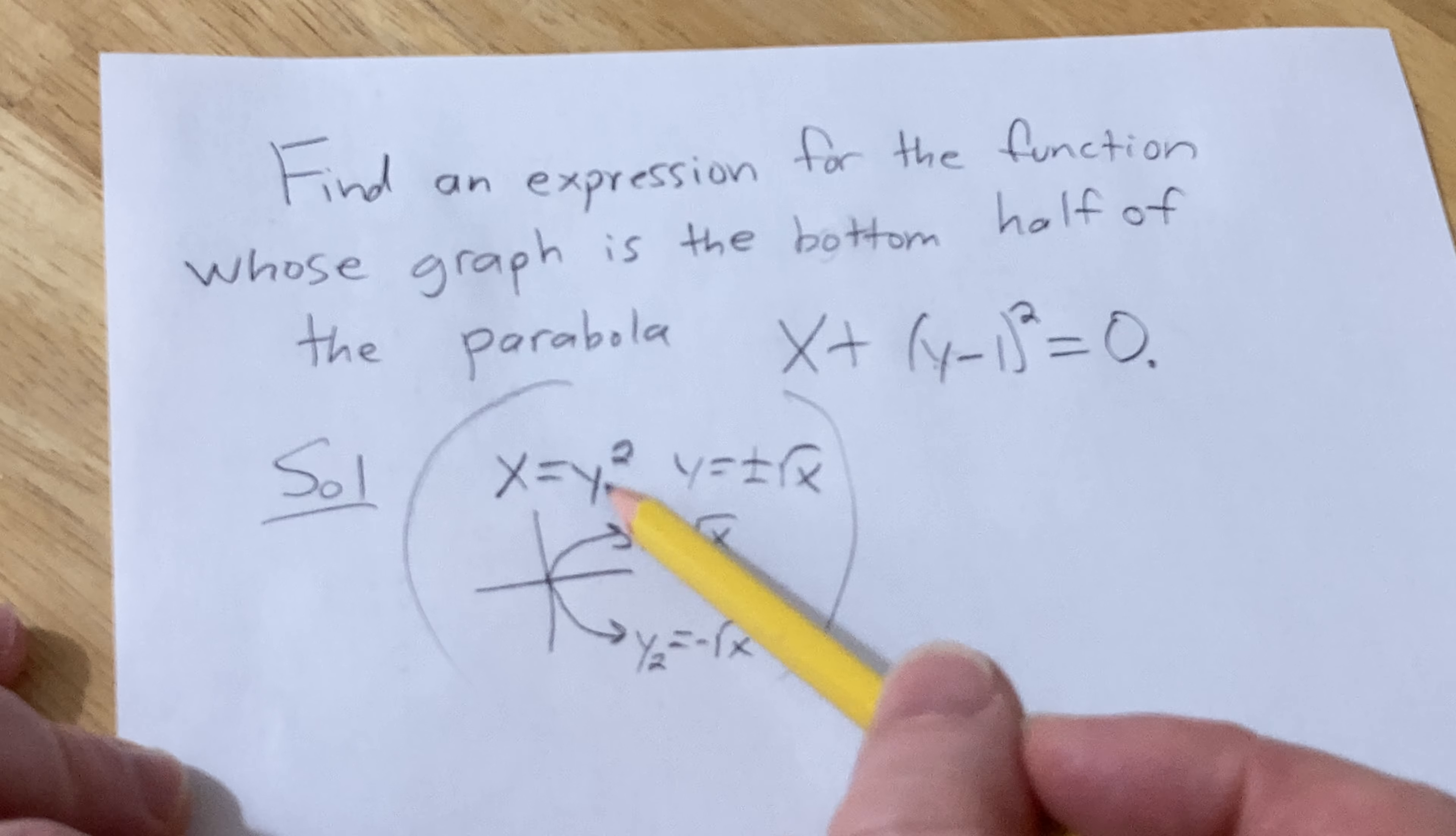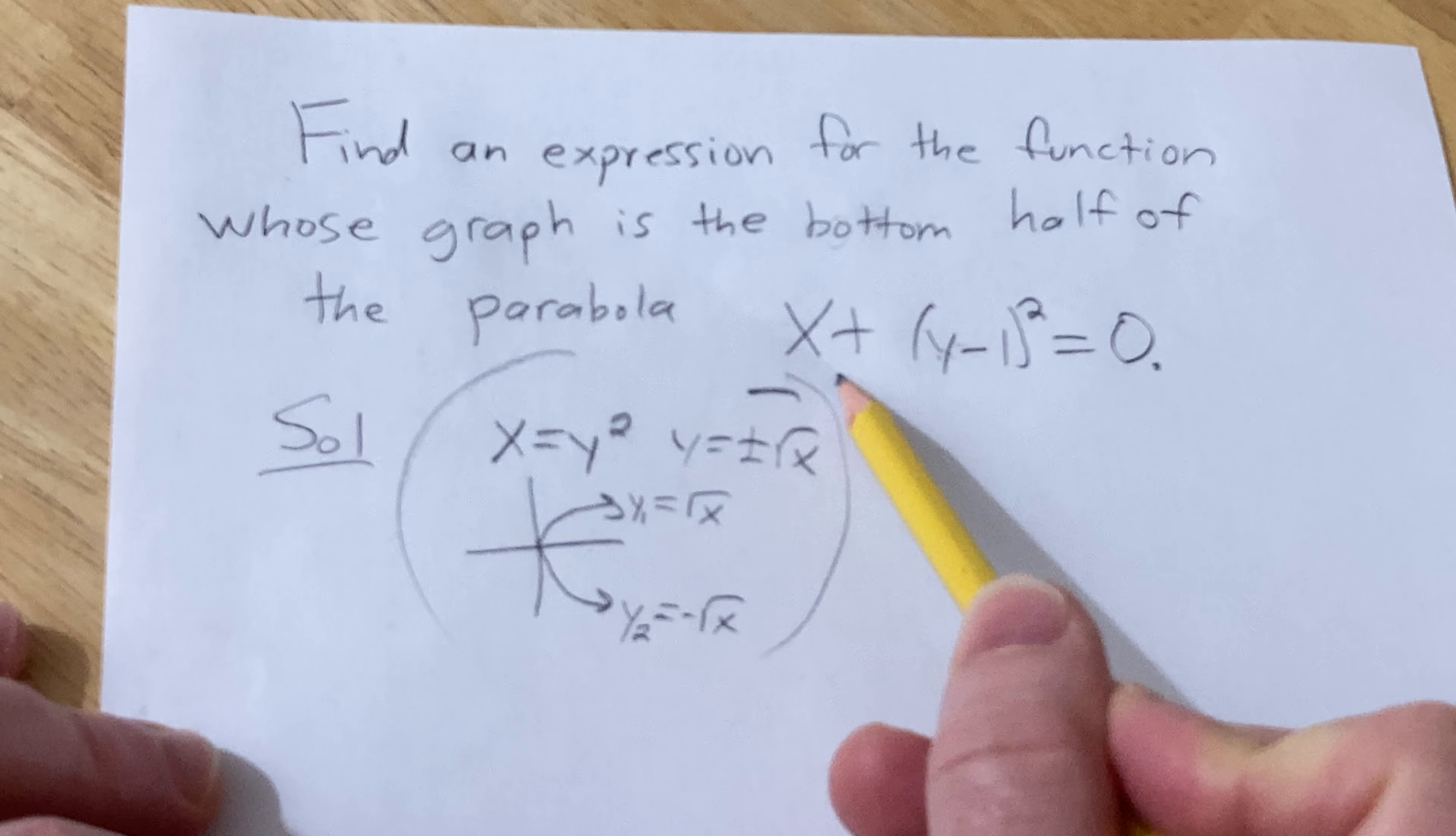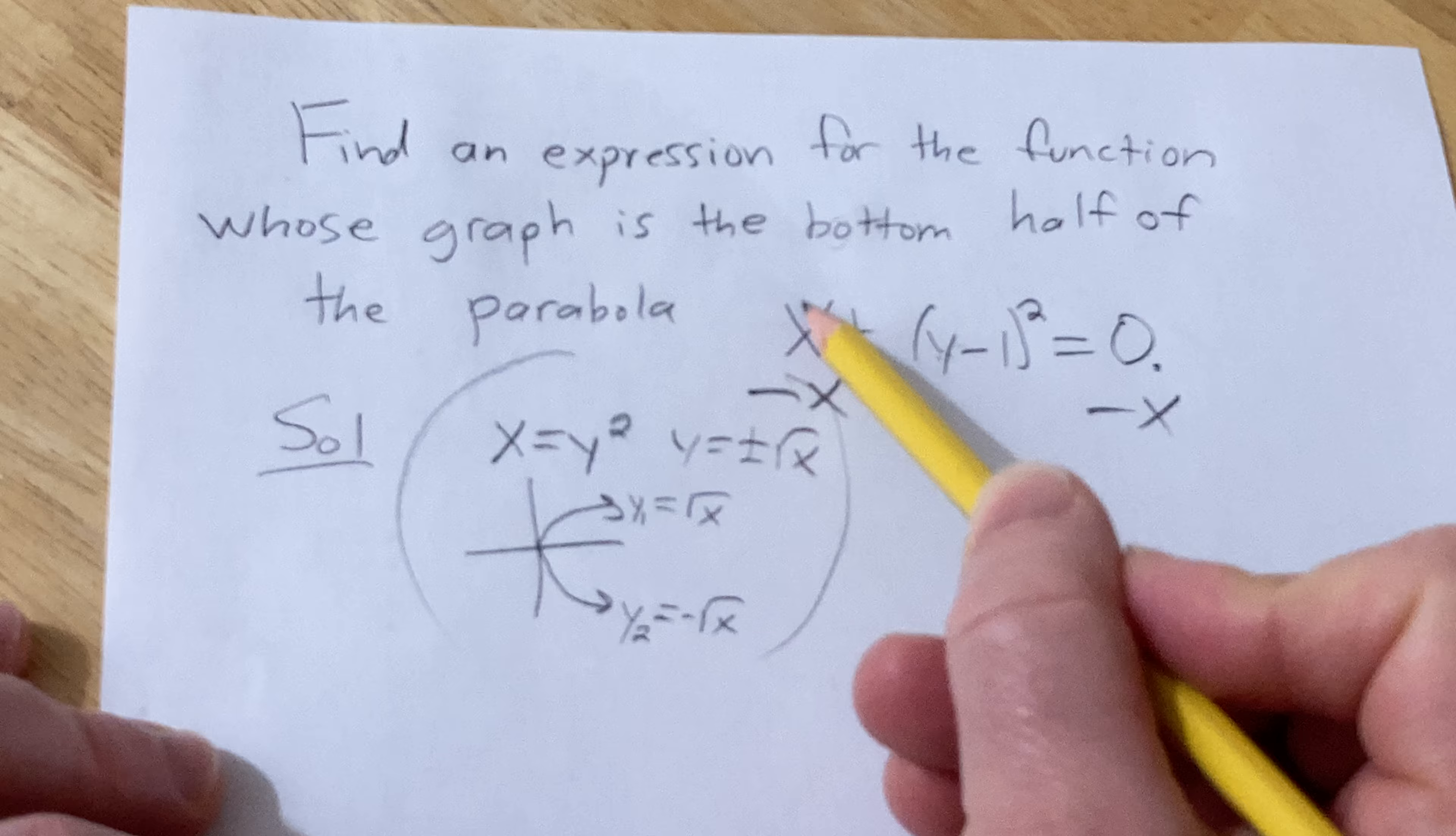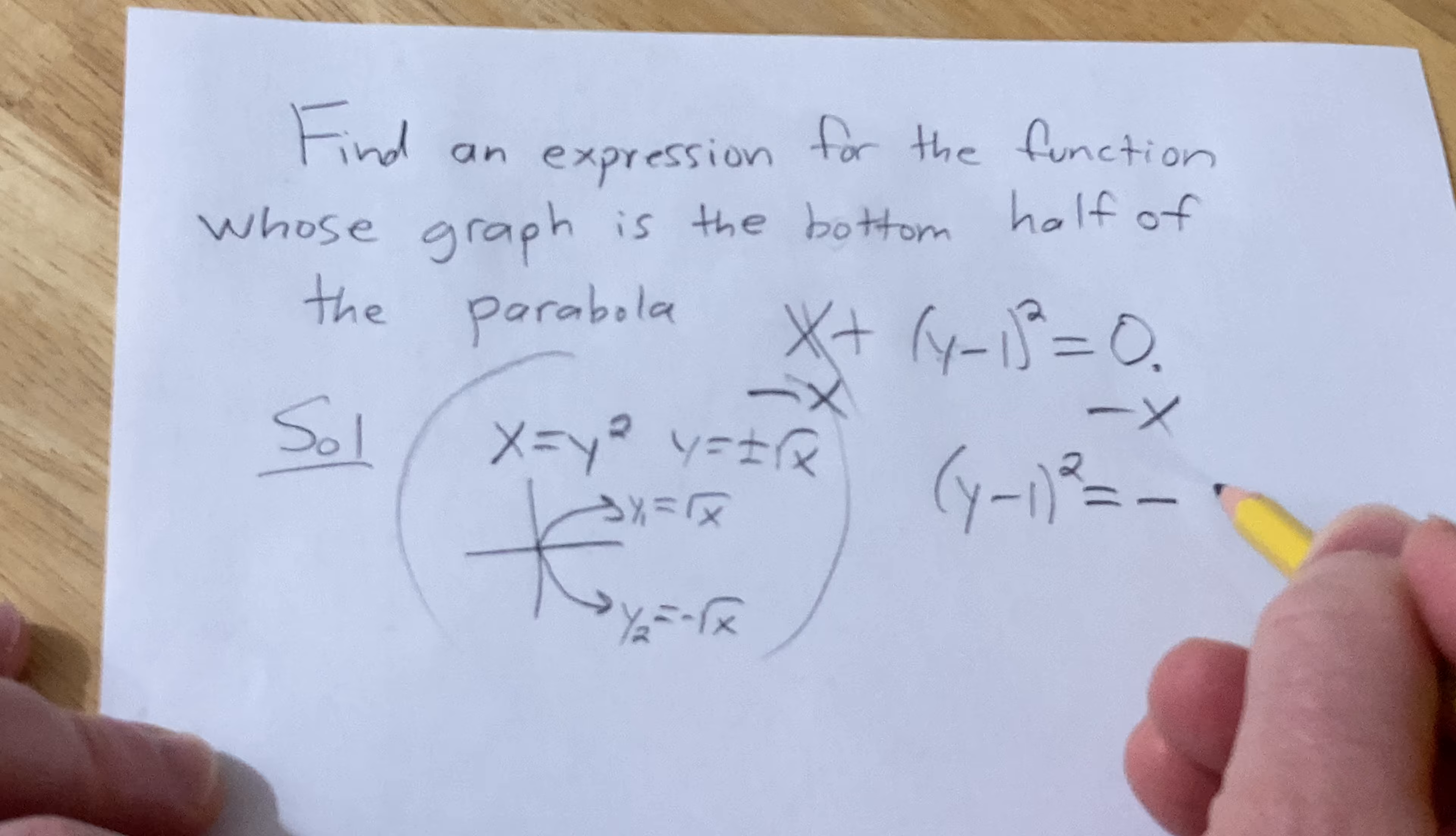Okay, so in this particular problem, just like in this fake example here, we basically have to solve for y. So we'll start by subtracting x from both sides. So we have (y - 1)² equals -x.